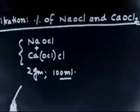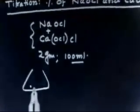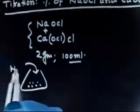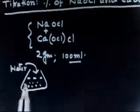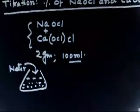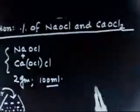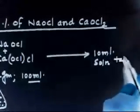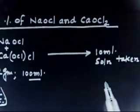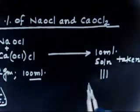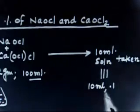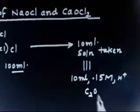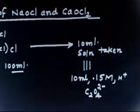We have a flask containing 2g NaCl plus CaOCl₂, and we pour water so the final volume becomes 100ml. Then 10ml of this solution is taken for titration, which requires 10ml of 0.15M acidified Na₂C₂O₄ (that is C₂O₄²⁻) for the end point of titration. The medium is acidic.